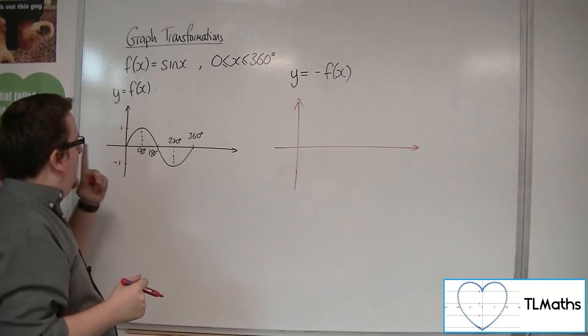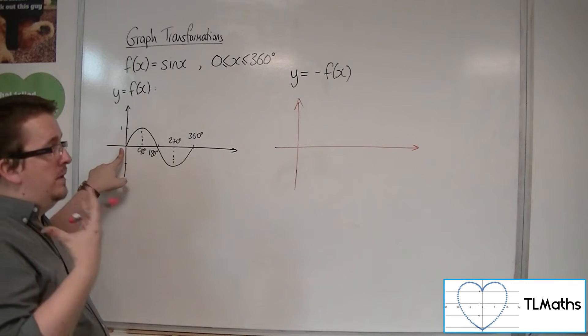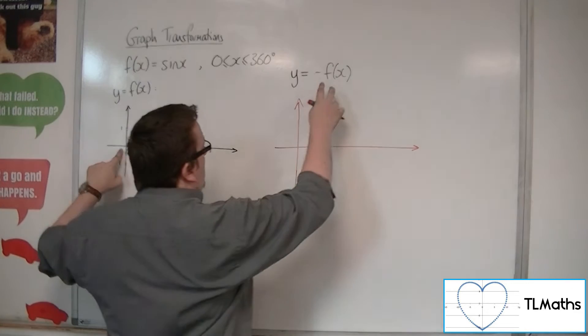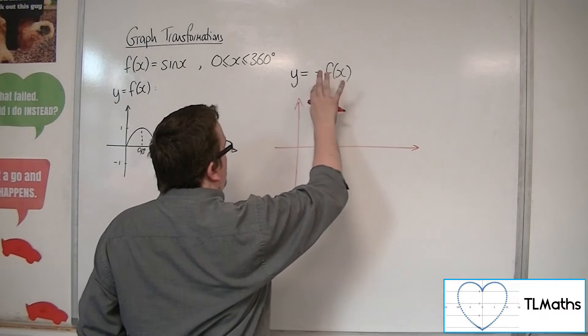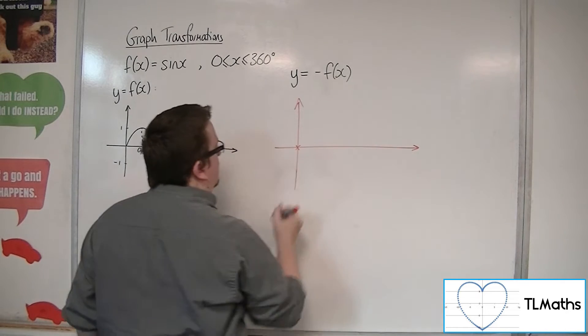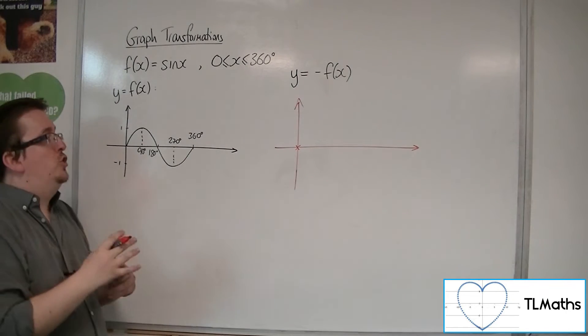Now, clearly, when x is 0, f of 0 is 0. So f of 0 is 0, negative of 0 is just 0 again. So that position, that point, does not change.